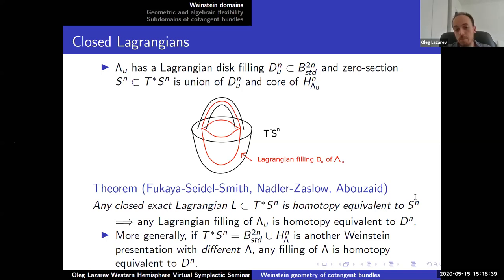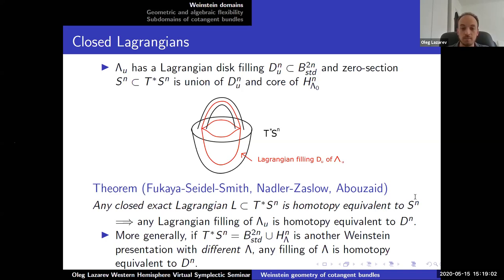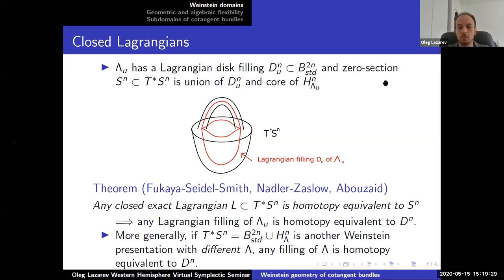One way to approach the nearby Lagrangian conjecture would be to strengthen this statement: for any presentation of T*S^n, that Legendrian has a disk filling, and furthermore that disk filling is the Lagrangian. If you had a hypothetical sphere in T*S^n, you might think you could make it a Weinstein subdomain and realize it as coming from a filling of the attaching sphere. So if you could prove that any filling of the attaching sphere is the unknot, you'd be in business.